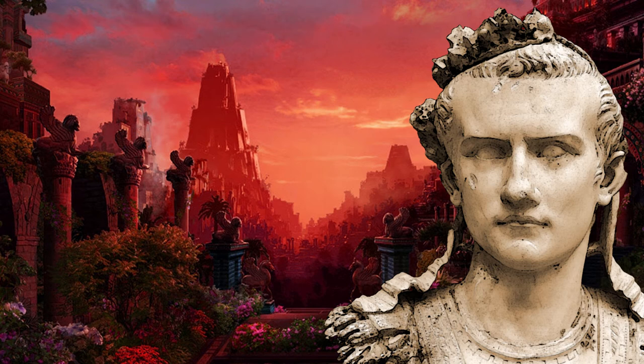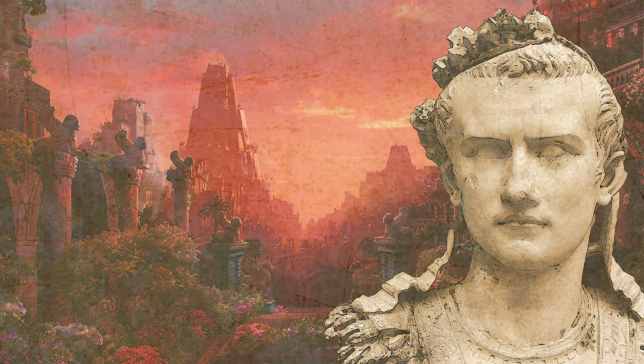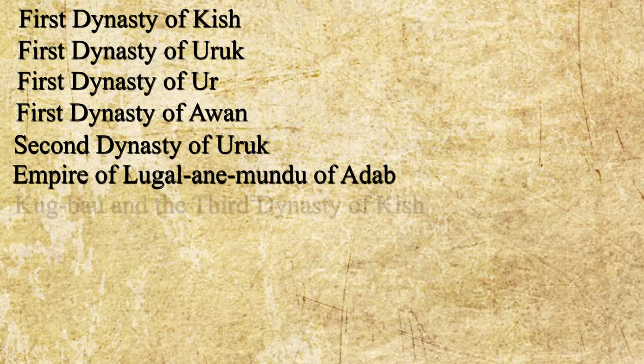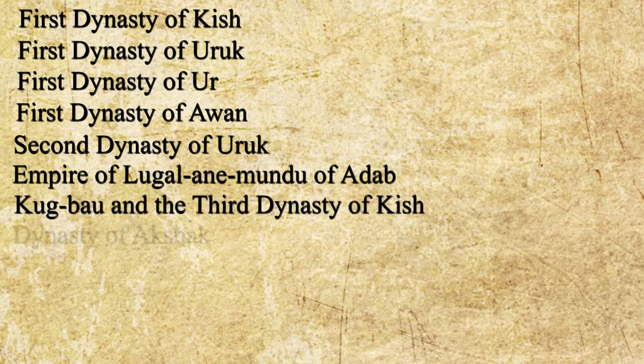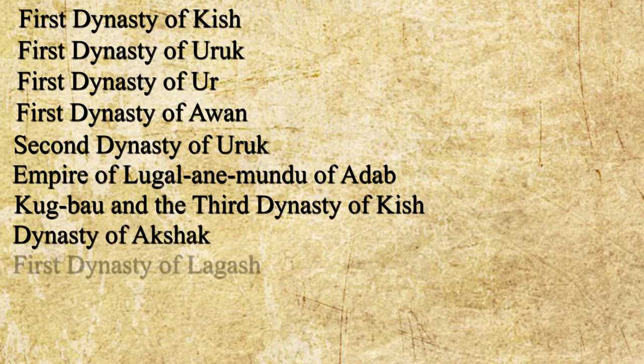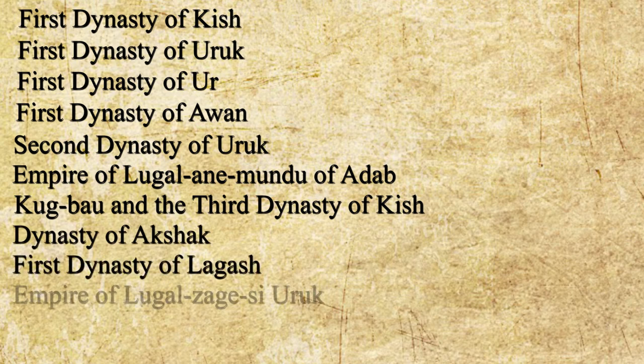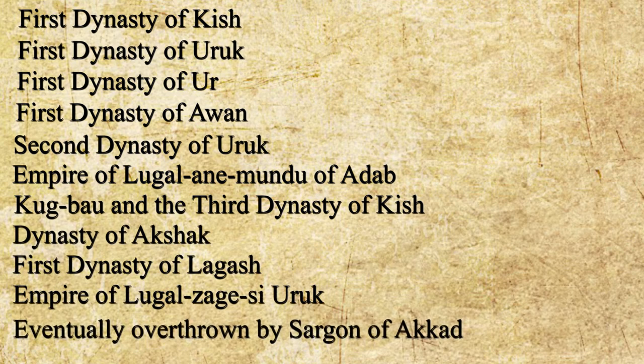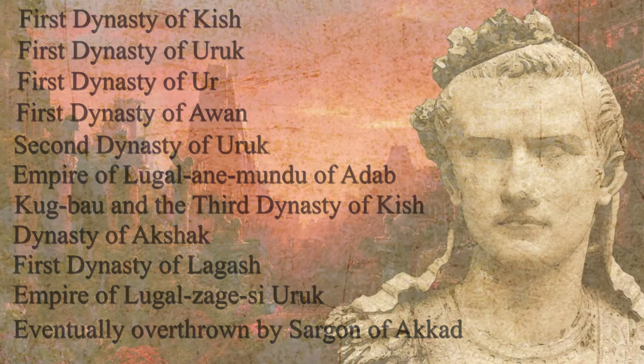As for the important dynasties of the Early Dynastic Period, they include: the 1st Dynasty of Kish, 1st Dynasty of Uruk, 1st Dynasty of Ur, 1st Dynasty of Awan, 2nd Dynasty of Uruk, the Empire of Lugal-Anne-Mundu of Adab, Ku-Baba and the 3rd Dynasty of Kish, 2nd Dynasty of Akshak, 1st Dynasty of Lagash, and the Empire of Lugal-Zage-Si of Uruk, which was eventually overthrown by Sargon of Akkad.